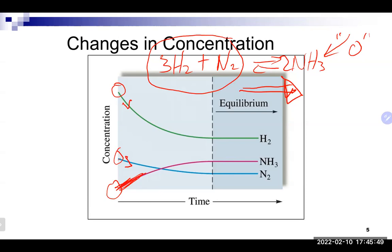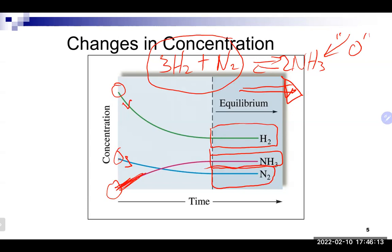At some point the reaction reaches chemical equilibrium, and that's where everybody gets locked into place in terms of concentrations or pressures for gases. All three lines plateau — their concentrations are not changing with time. That dotted line is where chemical equilibrium has been reached, which is the point where the rate of the forward reaction equals the rate of the reverse reaction.